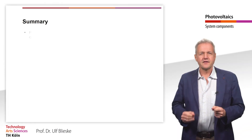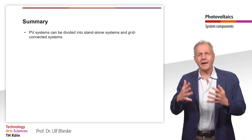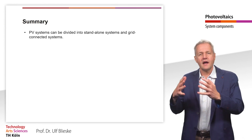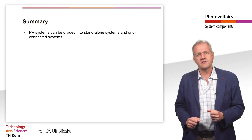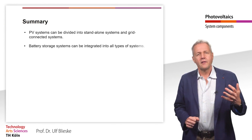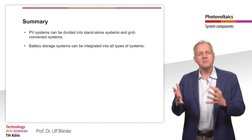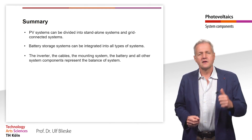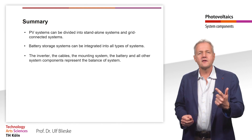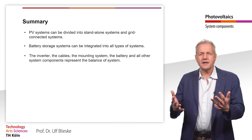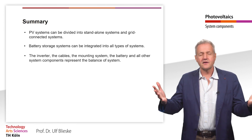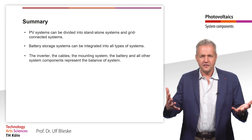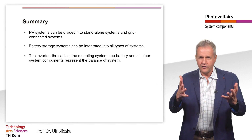Let us summarize. PV systems can basically be divided into stand-alone PV systems and grid-connected PV systems. Battery storage systems can be integrated into all types of systems. The inverter, the cables, the mounting system, the battery, and all other system components represent the balance of system. Thank you for your attention.